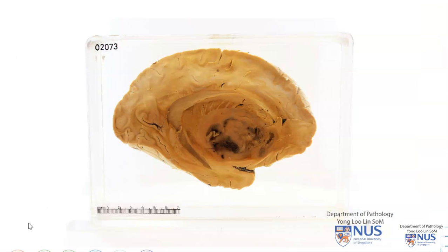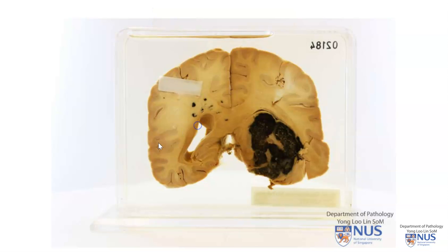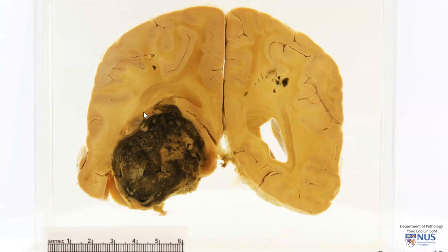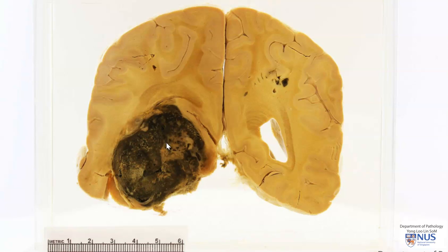Let's look at the next specimen. Here we see a coronal section of the brain, and there is a very obvious discrete mass or space-occupying lesion in the right cerebral hemisphere. This looks quite different from the other mass, but we can also see very extensive blackish or brownish-blackish areas of hemorrhage and also some pale areas of necrosis. This may potentially be mistaken for an area of intracerebral hemorrhage because of the extensive hemorrhage into this tumor, and it may sometimes be difficult to differentiate between intracerebral hemorrhage and tumor on radiology — a biopsy may be useful.